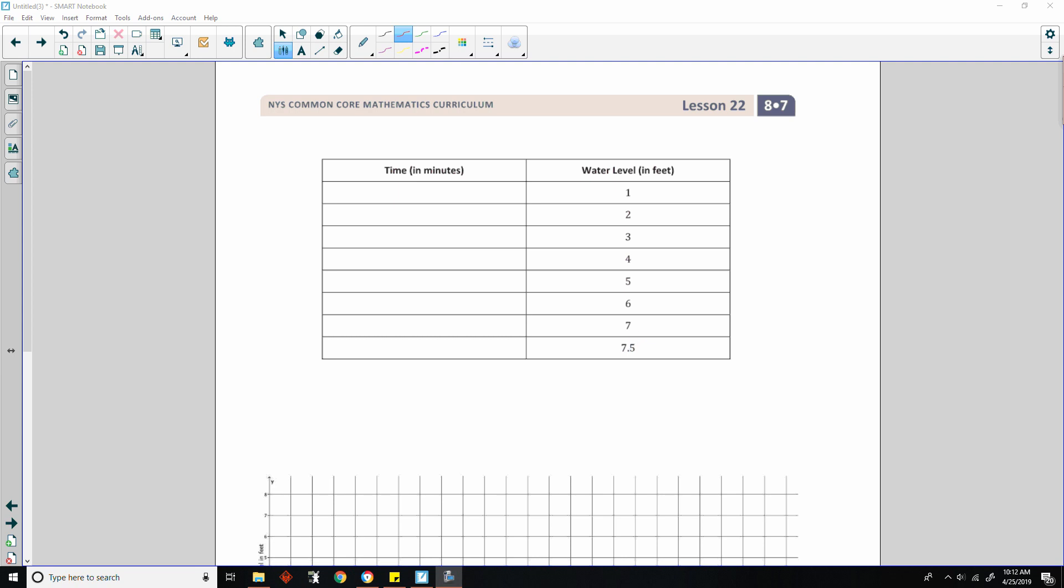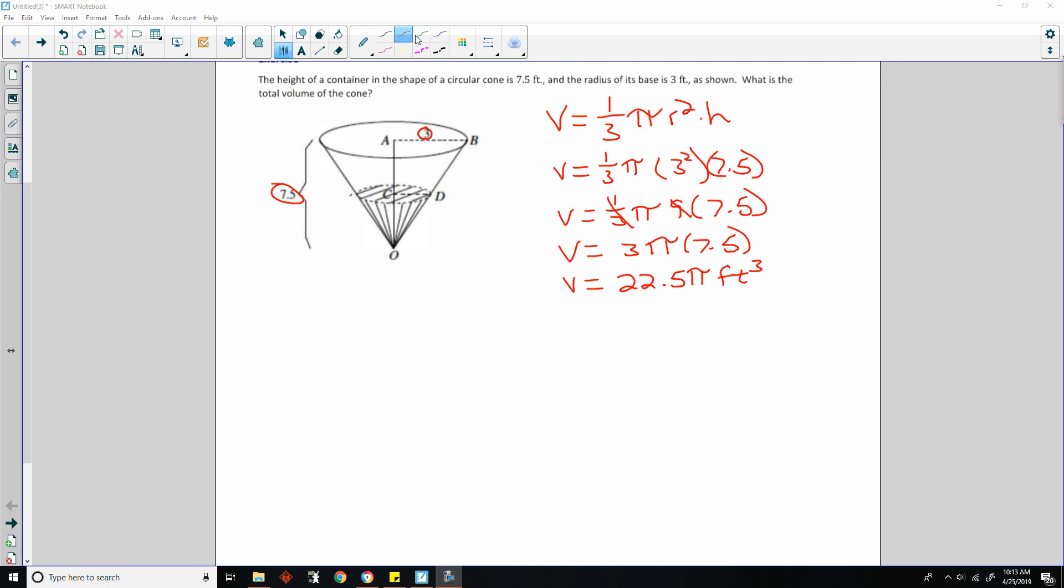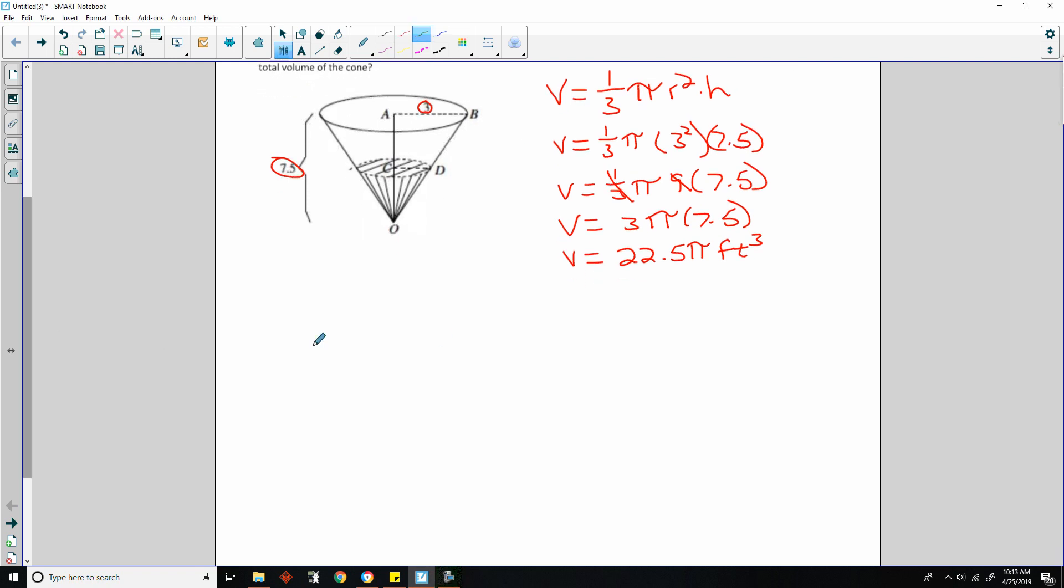So if we know the rate at which the cone is being filled, we could take the total volume and divide it by the rate to determine how long it would take to fill. Water flows into the container in its inverted position at a constant rate of 6 cubic feet per minute. Approximately when will the container be filled? So I went back to the previous page just so I had room to draw or to write.